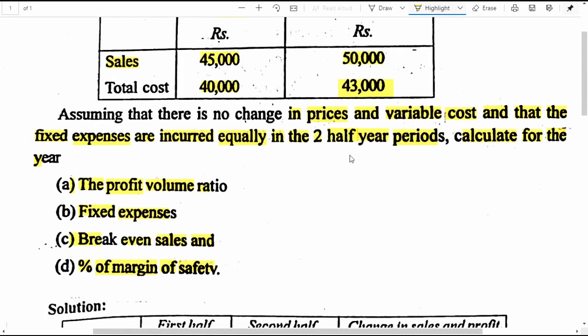The important point to be understood here is there is no change in the selling price and variable cost in the whole year, and similarly fixed expenses are incurred evenly or equally throughout the year. Therefore, there will not be any difference between the fixed cost related to the two half year periods of the business enterprise.